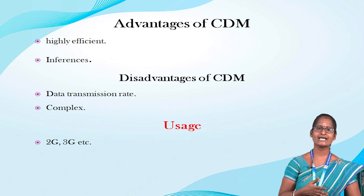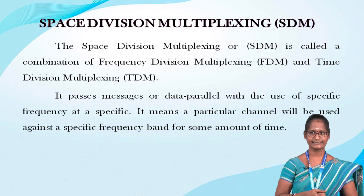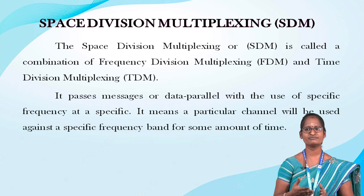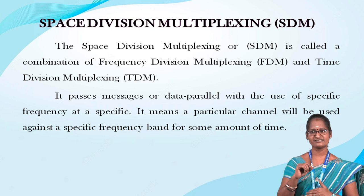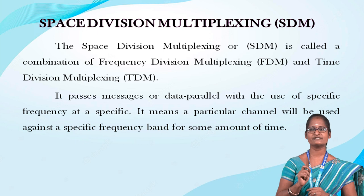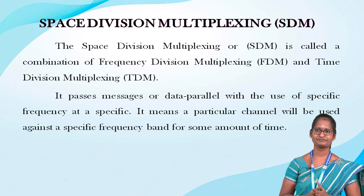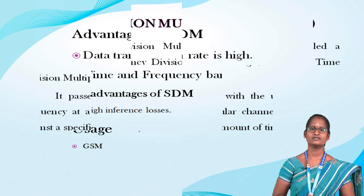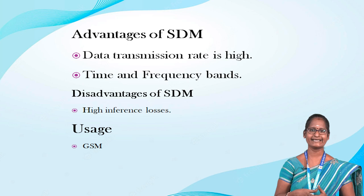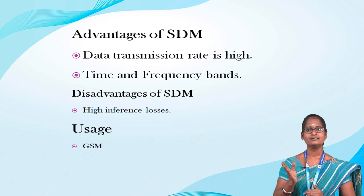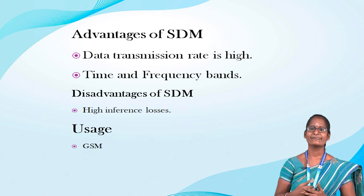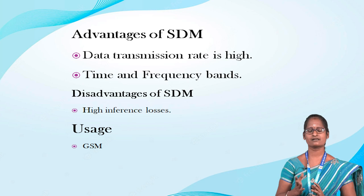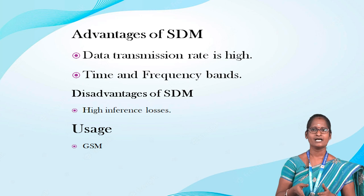The fourth type is Space Division Multiplexing, shortly called SDM. It is a combination of frequency division multiplexing and time division multiplexing. It passes messages or data in parallel using a specific frequency at a specific time, meaning a particular channel will be used against a specific frequency band for some amount of time. Advantages of SDM: the data transmission rate is very high and time and frequency bands are utilized at maximum potential. Disadvantages: interference occurs and it faces high interference. SDM is used in GSM technology, where GSM stands for Global Service for Mobile technology.